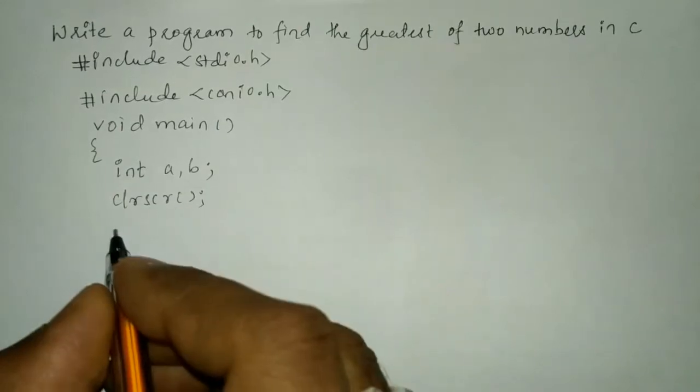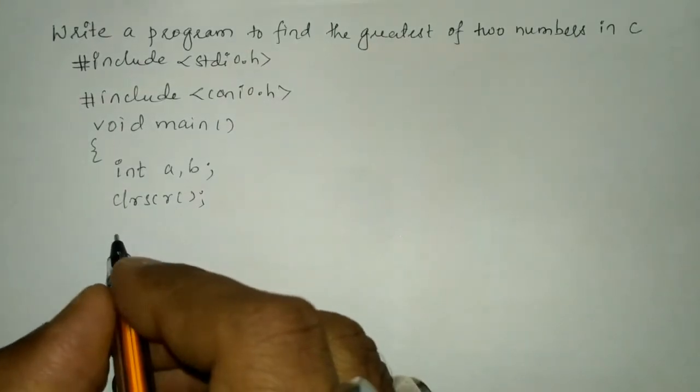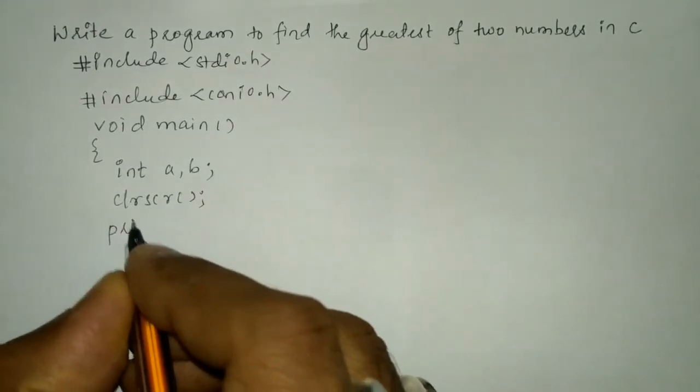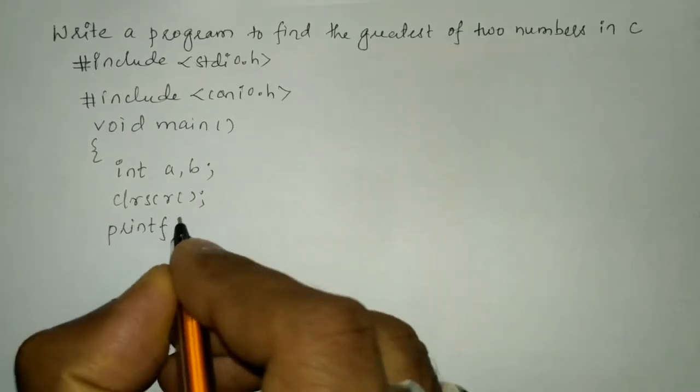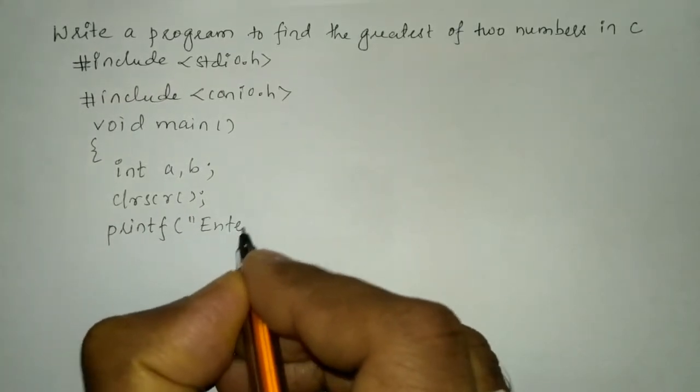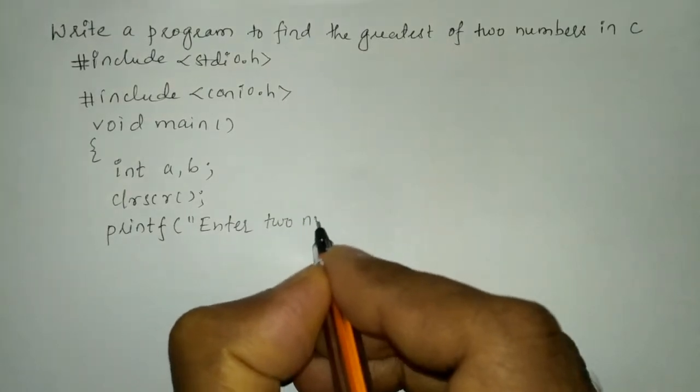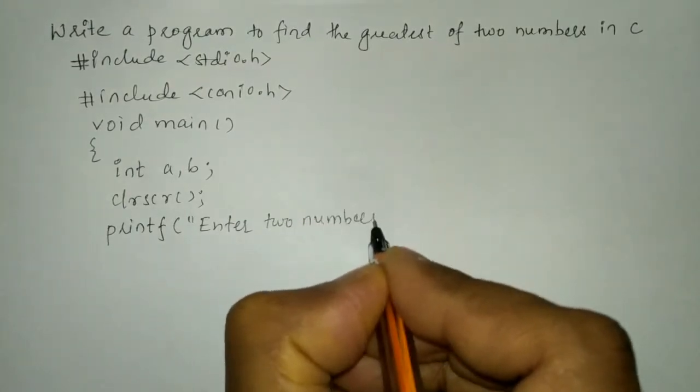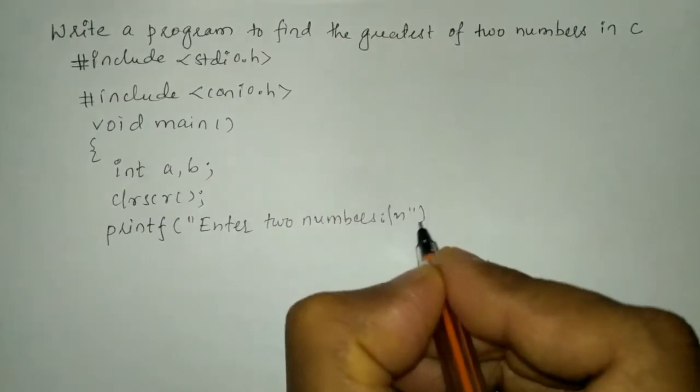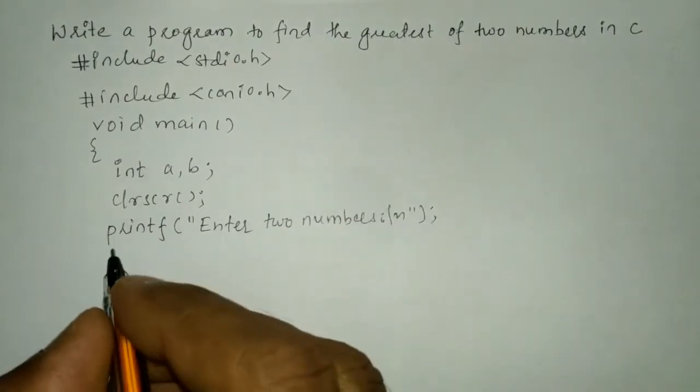clrscr is a function which is used to clear the screen. Now I am going to ask the user to enter two numbers using printf function. So in a double quotation mark I will write enter two numbers. Backward slash n brings the cursor down to the next line.